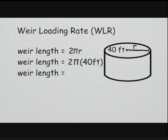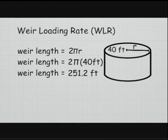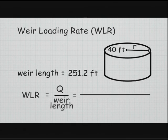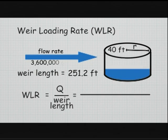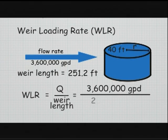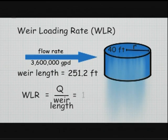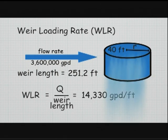The radius is 40 feet. 2 times pi times 40 feet equals 251.2 feet of weir length. We can now plug the weir length into our formula. Flow rate of 3.6 million gallons per day divided by 251.2 feet of weir equals 14,330 gallons per day per foot of weir.